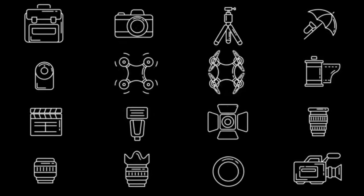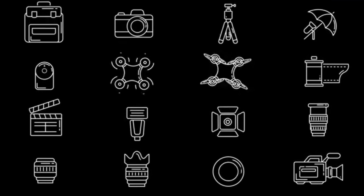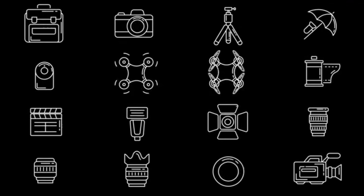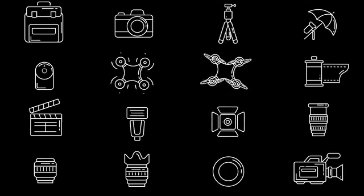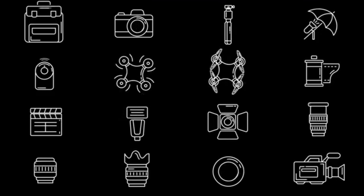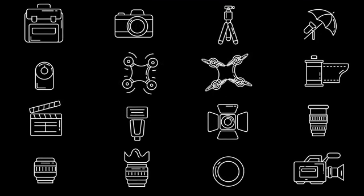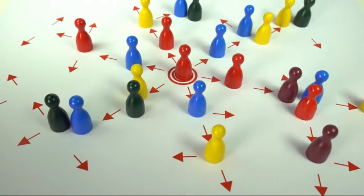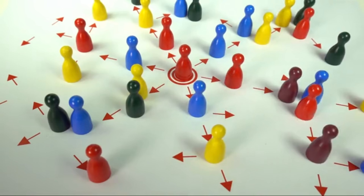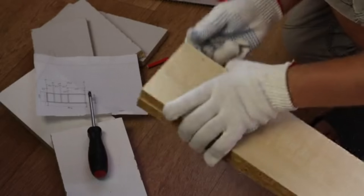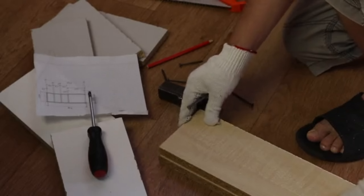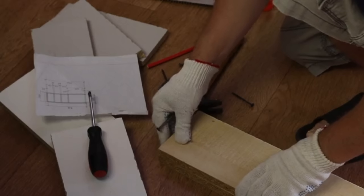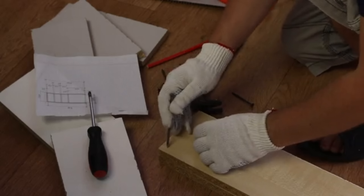We can group objects in many ways, such as by their size, shape, color, weight, texture, or material. But sometimes grouping can be a little confusing, especially if we don't know how to do it properly. That's why we have to carefully think about the properties of the objects before grouping them.